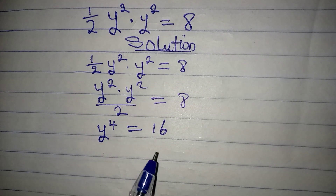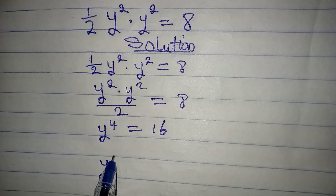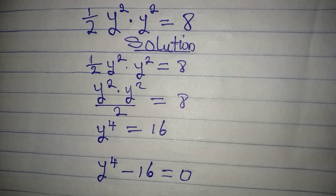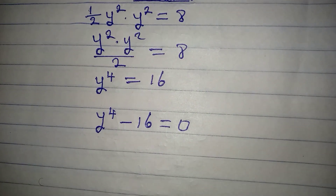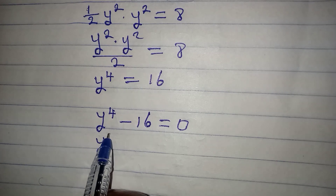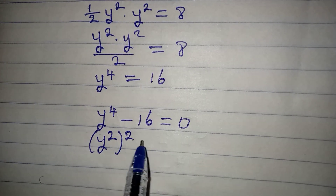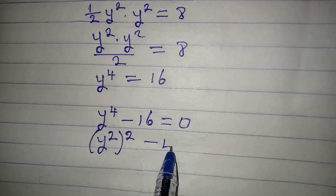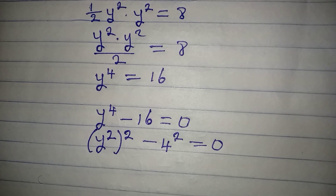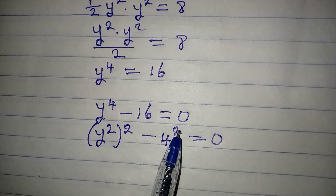The next thing is bringing 16 to the left-hand side, so that y to the power of 4 minus 16 will be equal to 0. Then we rewrite this as y squared to the power of 2 minus 4 to the power of 2 equals 0. Remember that 16 is the same thing as 4 to the power of 2.